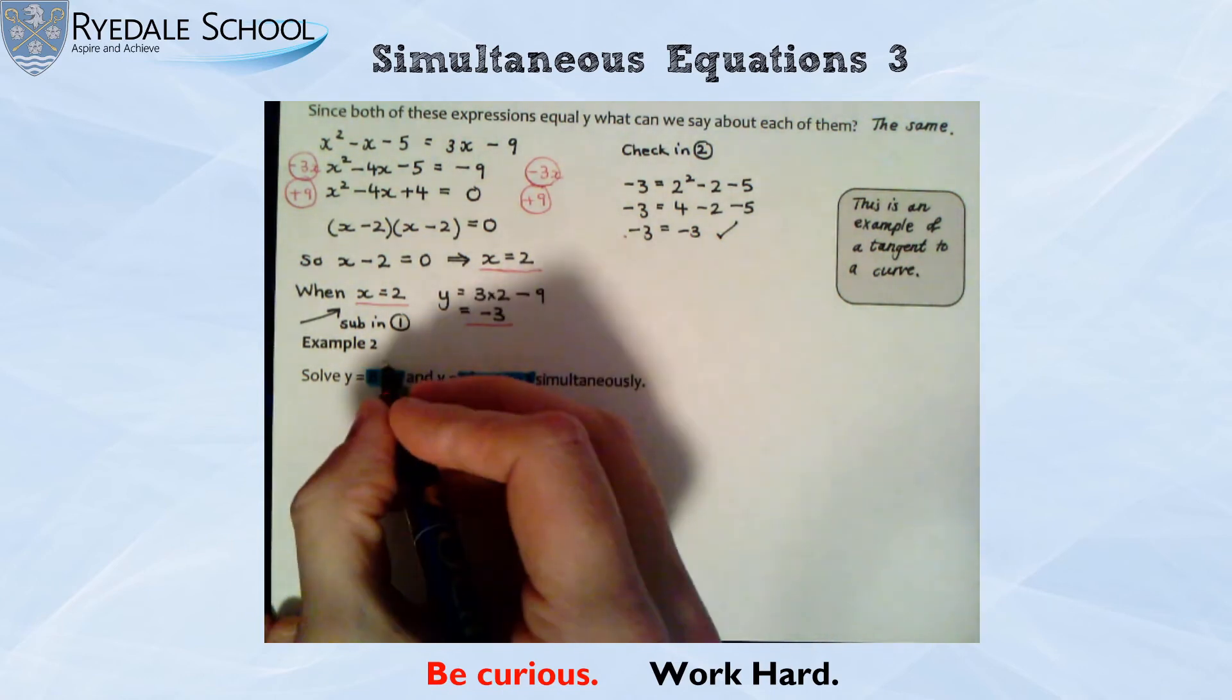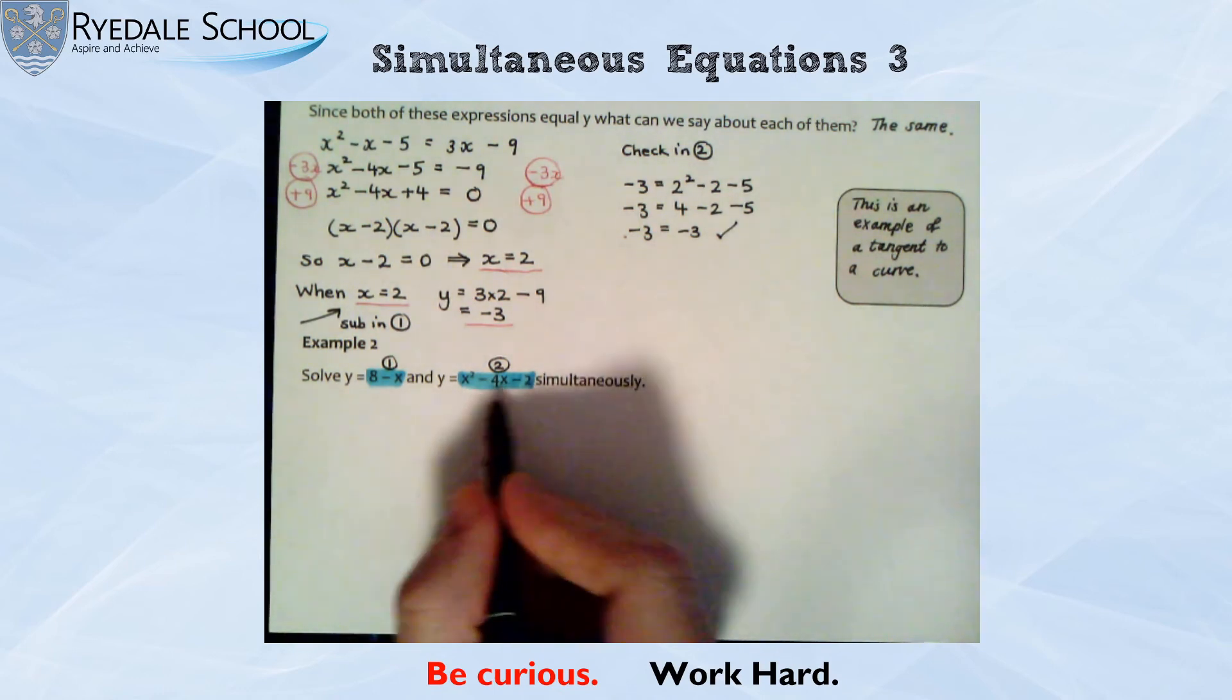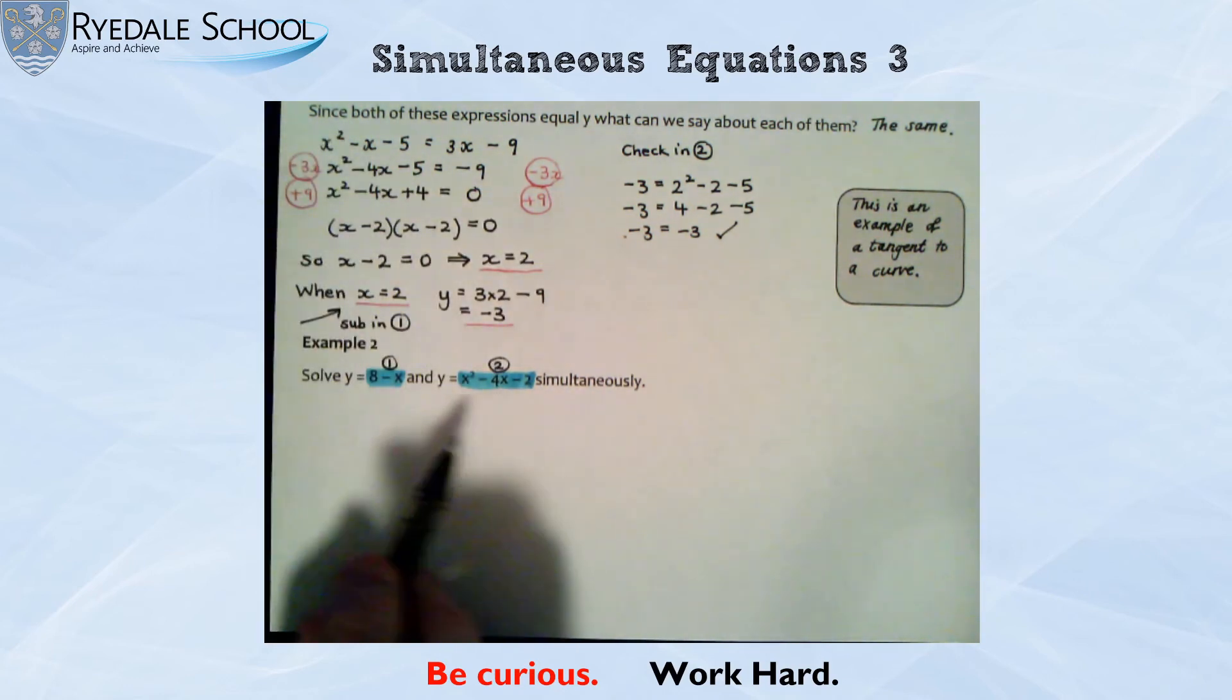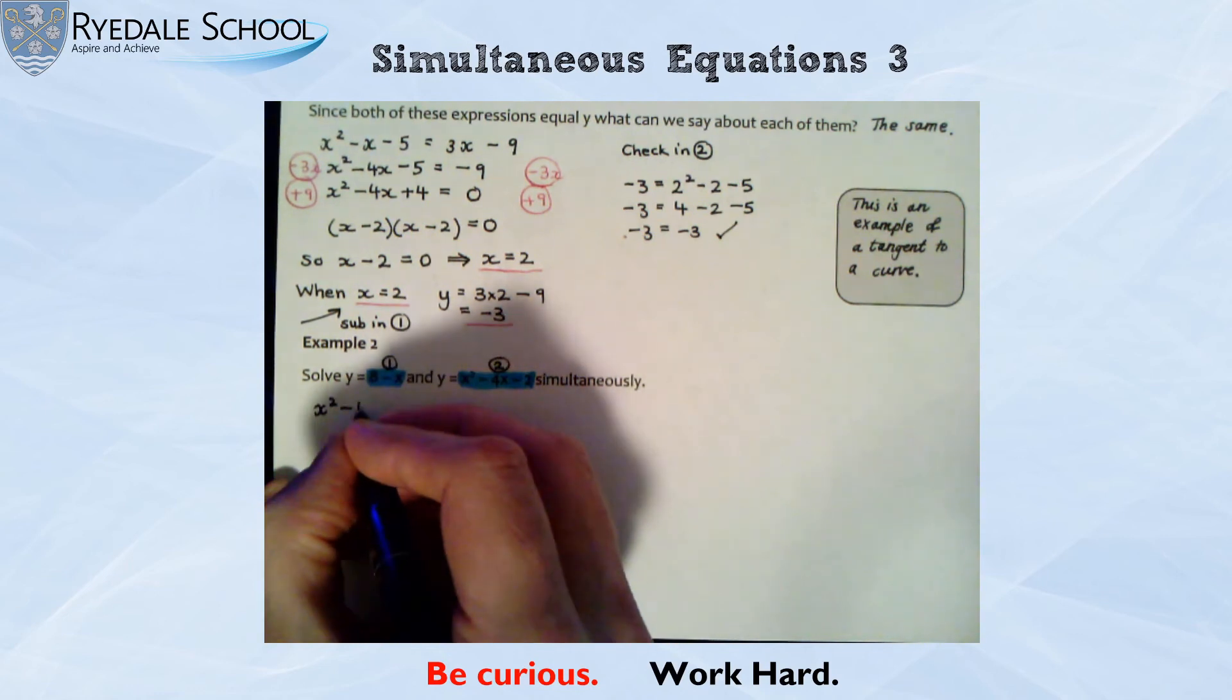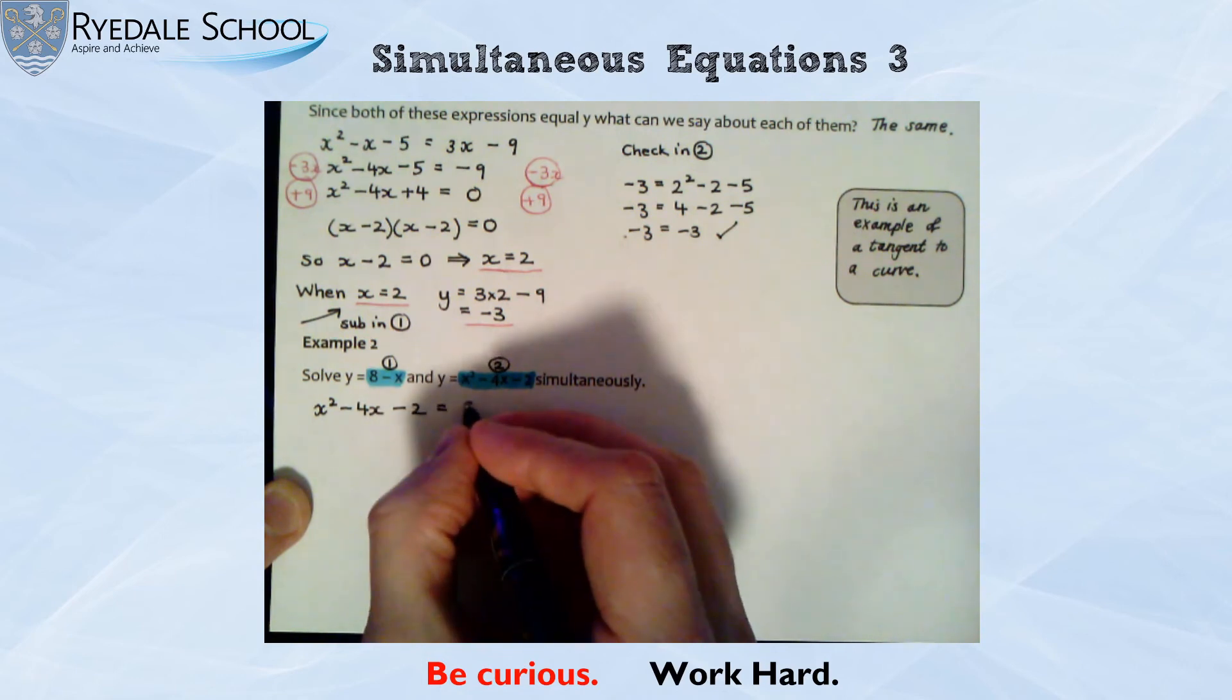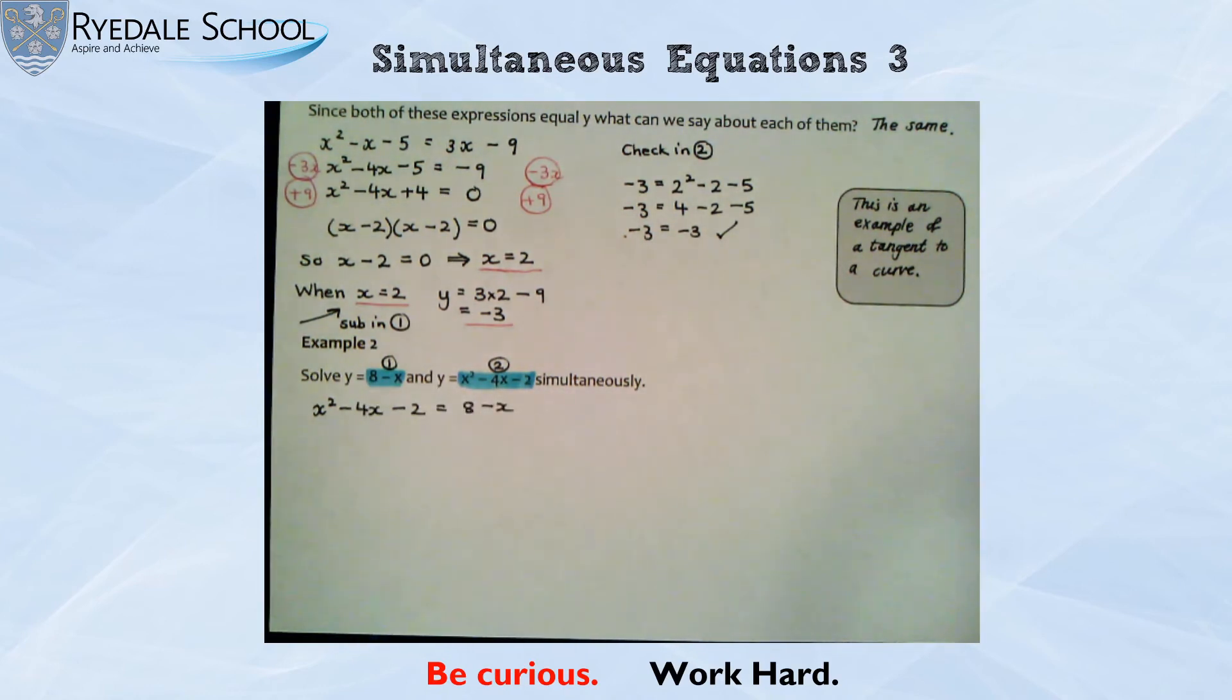So what I'm going to do is, yes, I'll call this one 1. I'll call this one 2. I'm first of all going to equate those two expressions. I'm going to start writing number 2 first because it's got the positive number of x squareds. And that will put, like I did in the first one, my x squareds in the right place in terms of how I like my quadratics to look. So I've got x squared take away 4x take away 2 equals 8 take away x. So that is just that equals that because they were both y.